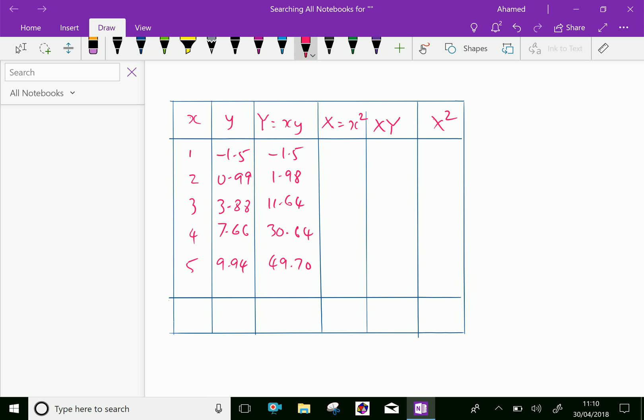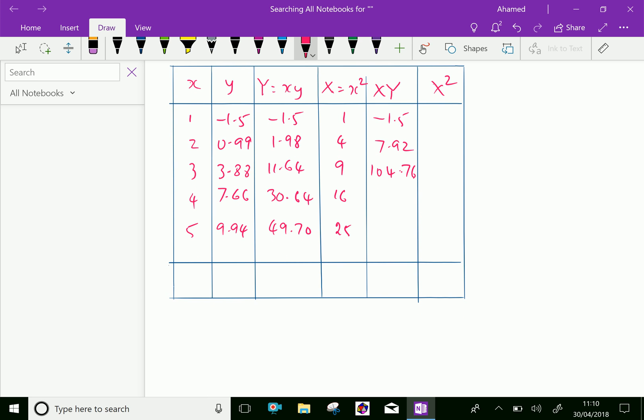Capital X equals x² gives 1, 4, 9, 16, 25. Then capital XY equals x³y: minus 1.5, 7.92, 104.76, 490.24, and 1242.5.